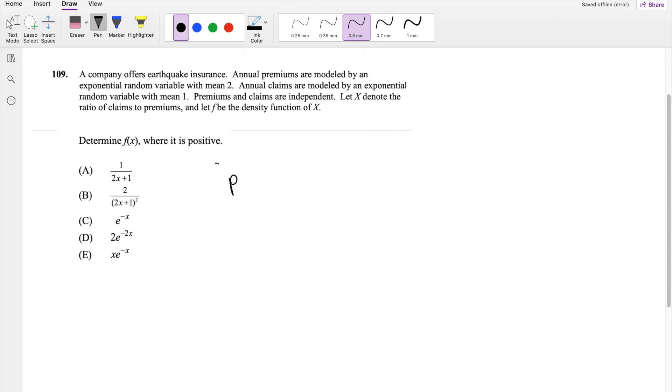So they say the annual premium, so I'm going to write the function for F of P is equal to an exponential function with mean 2, so that's 1 over 2 e to the negative P over 2. And then they also say the annual claim for C, where C is claims, is equal to e to the negative C over 1. Because they're saying it's an exponential with mean 1.